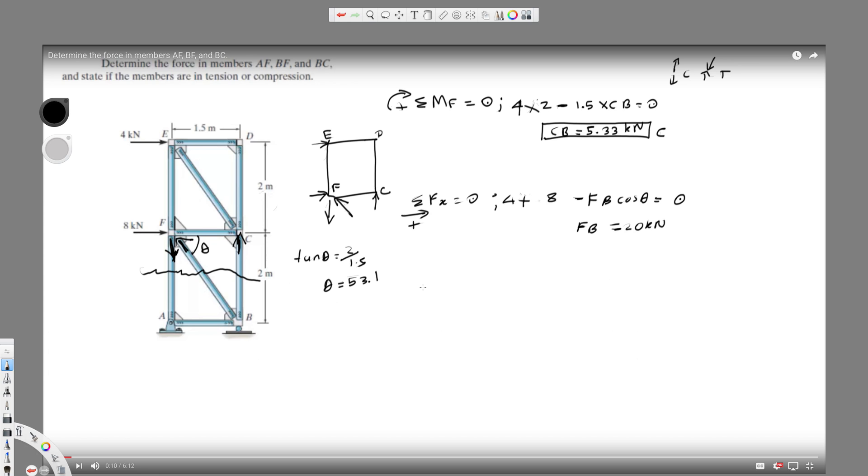So if I find the FB, it comes out to be 20 kilonewtons. And then I can solve for FY. So let's put it in this one. Since this is positive, we know we got the right direction, and since they're going apart from each other, it means it's a compression.